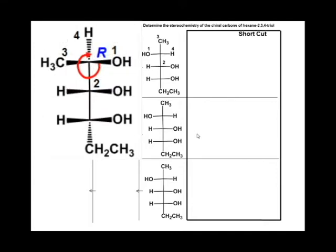To visualize the Fisher projection, draw as dashed and wedges. Now rotate the hydrogen to the back, and we see that the carbon has an R configuration.